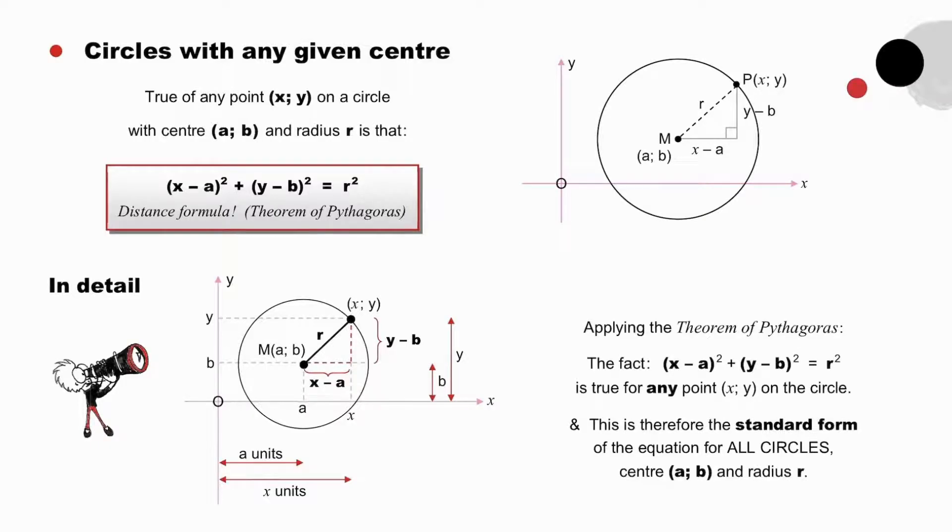And now, circles with any given center. Again, true of any point (x, y) on a circle, this time with center (a, b), and radius r, is that (x - a) all squared plus (y - b) all squared is equal to r squared.